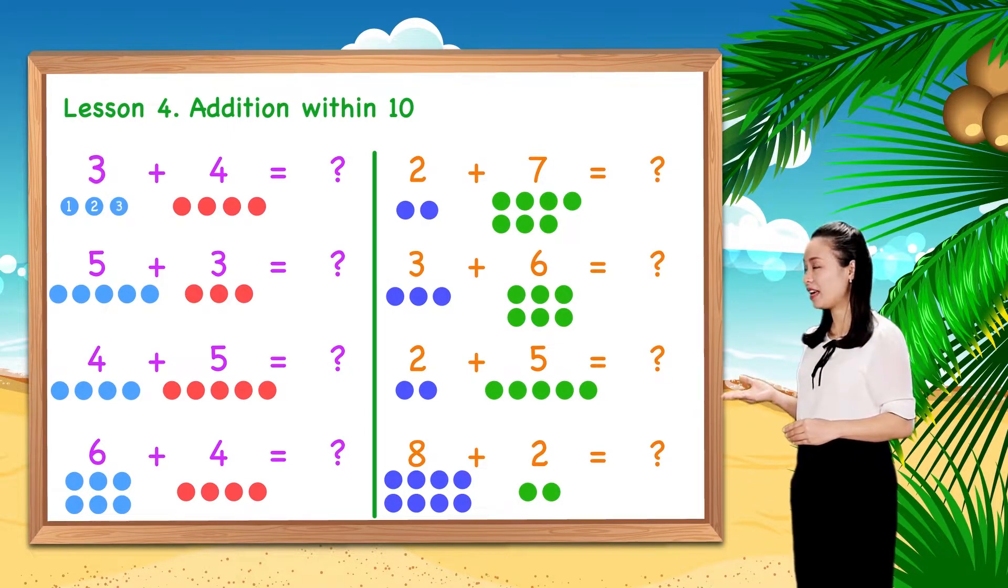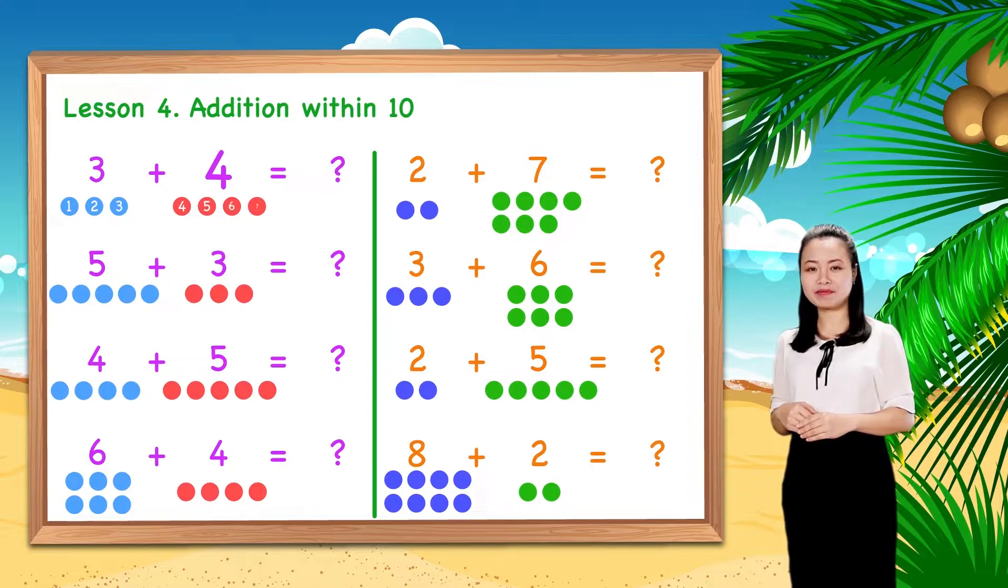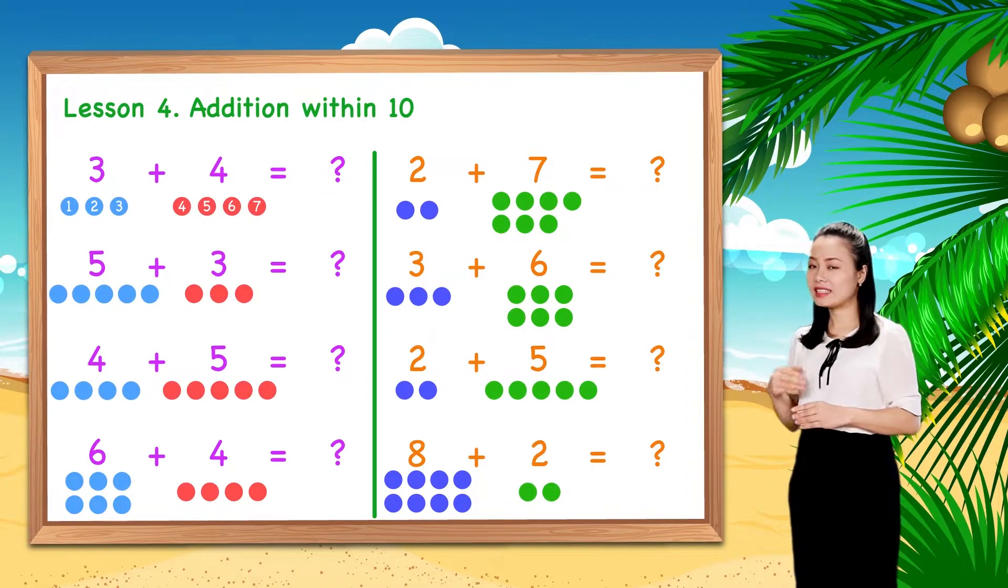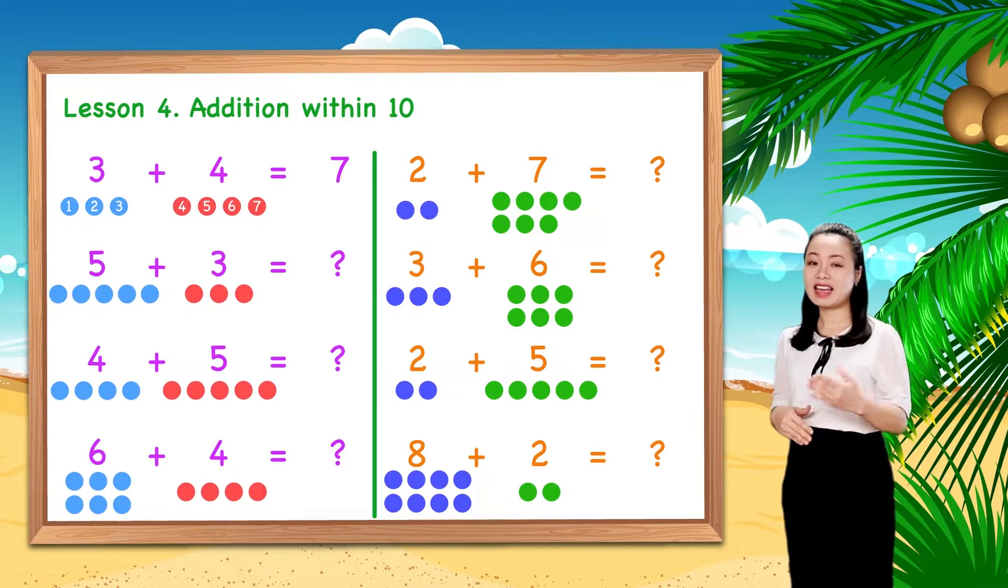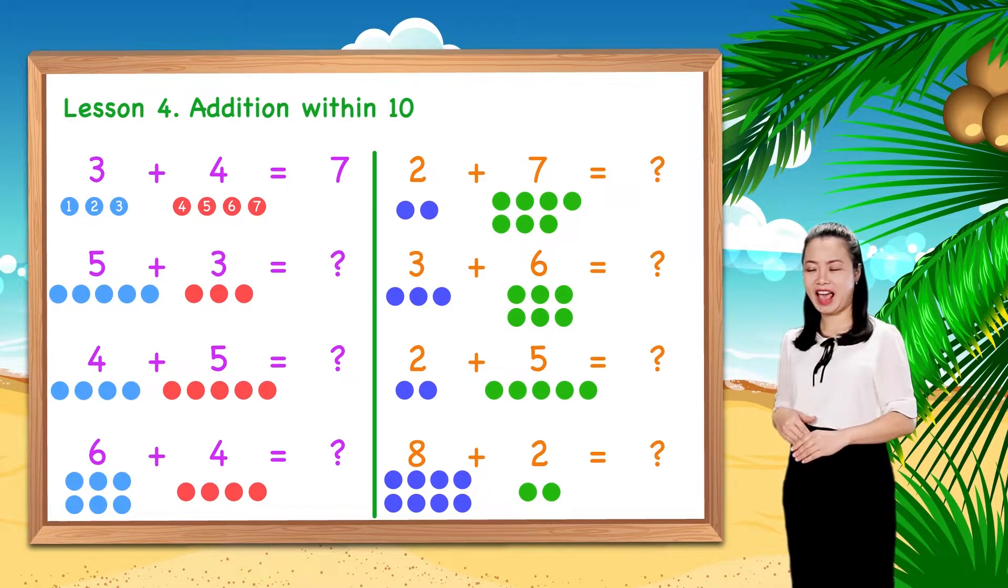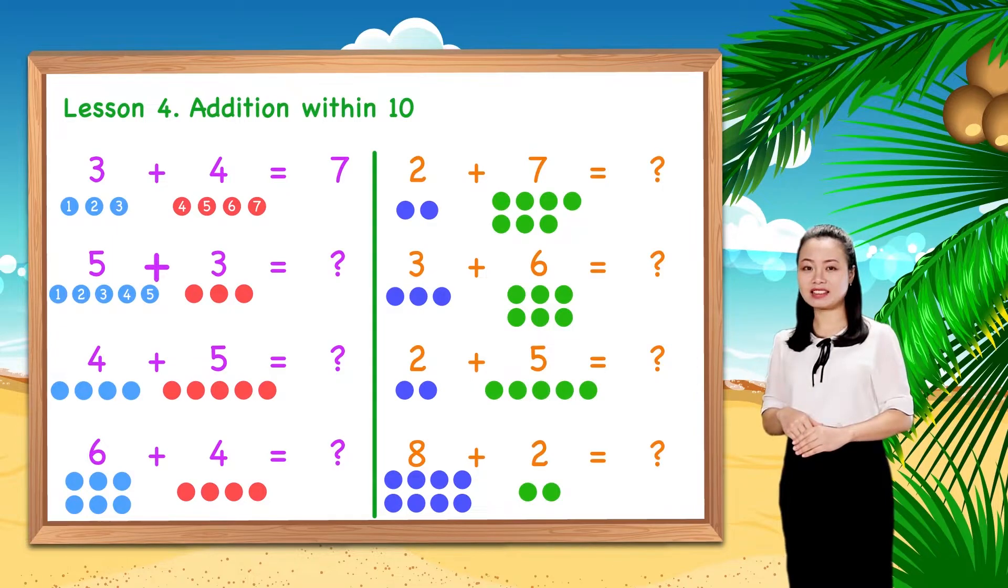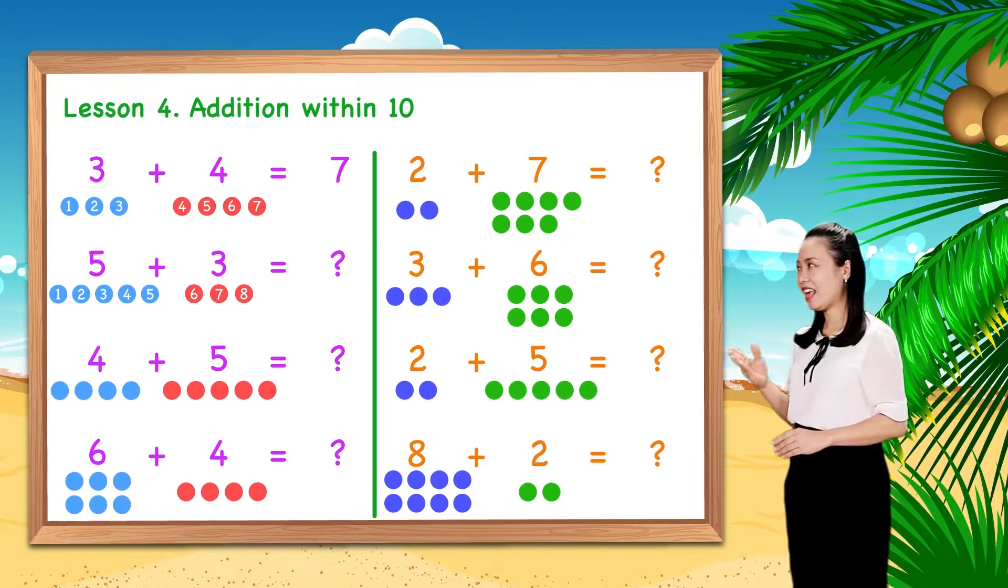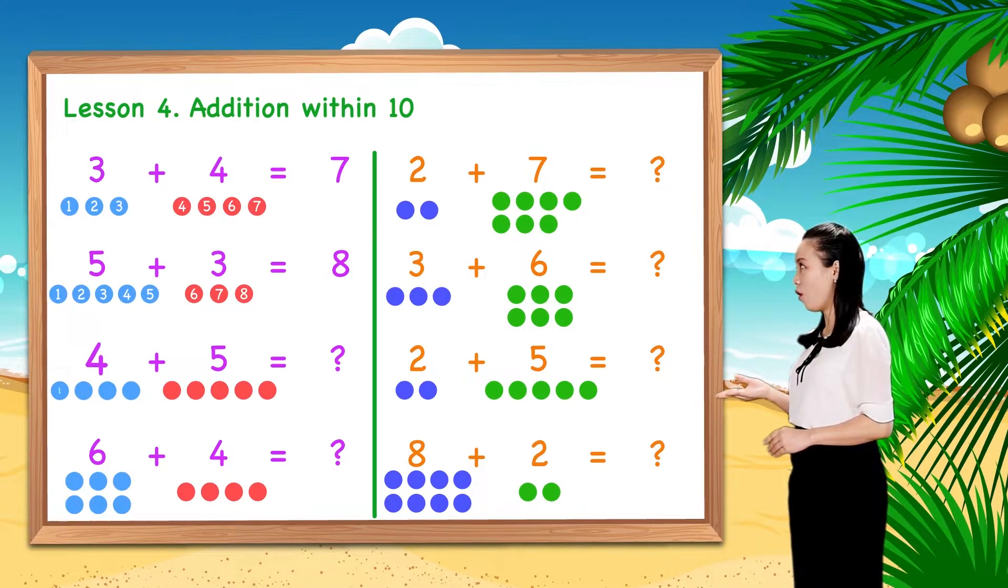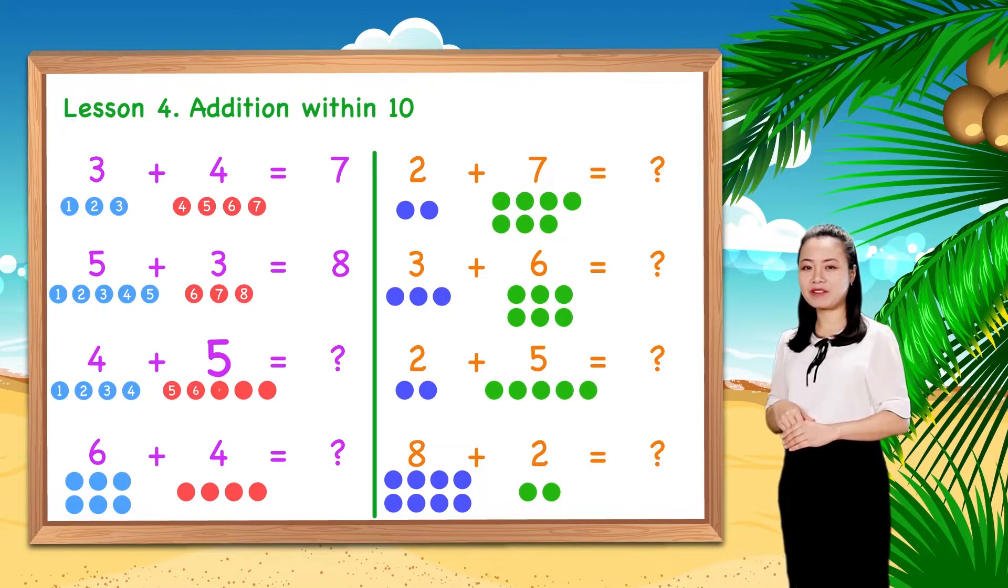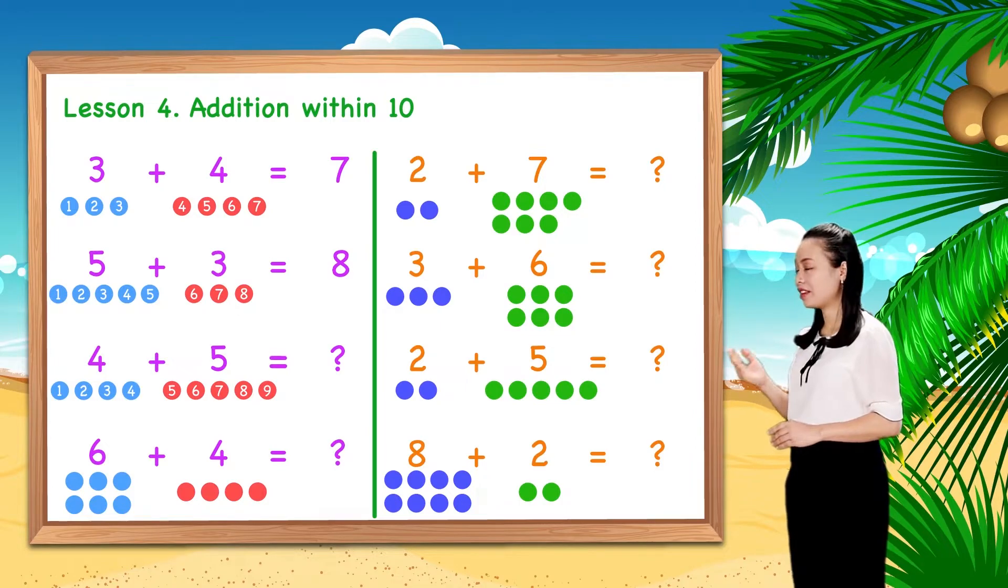So, 3 plus 4 equals 7. Next, 5 plus 3 equals 8. 4 plus 5 equals 9.